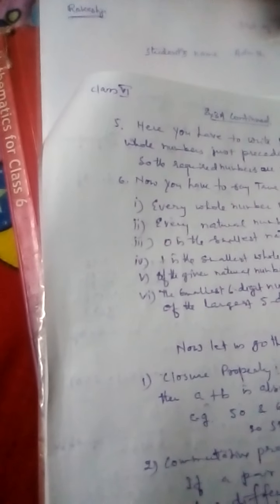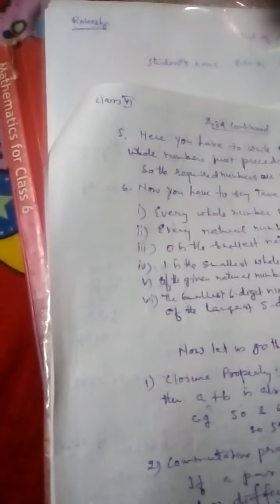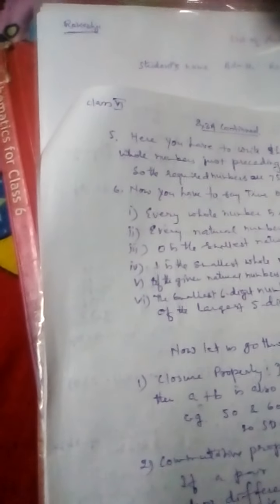The smallest six-digit number is the successor of the largest five-digit number. It is also true because the largest five-digit number is 99,999 and the smallest six-digit number is 1 lakh.